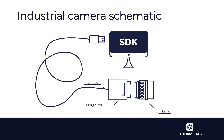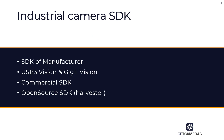This is the typical setup of an industrial camera: you have the lens, the camera with the image sensor, the interface, and the software development kit so that you can control the camera. If we look at the cost drivers, we can see that the main cost drivers are the image sensor and the lens. During this presentation we will discuss all the separate cost drivers in your application.